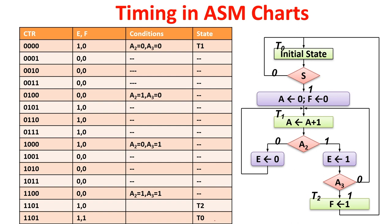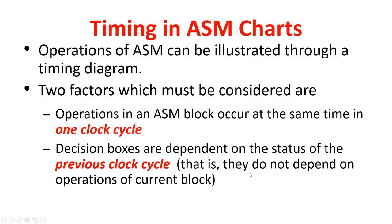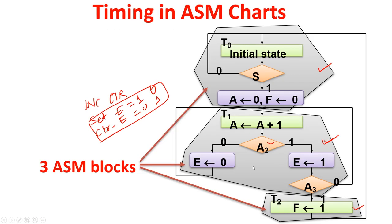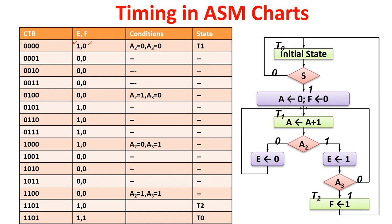Suppose T0 — at T0, if S=1 then A is set to 0 and F is set to 0; unless S=1, nothing is done. Suppose S=1, then starting from counter 0, based on A2 and A3 conditions it goes to state T1. In state T1, condition is A2=0 and A3=0. Counter becomes 0001, and E and F are set based on earlier values.